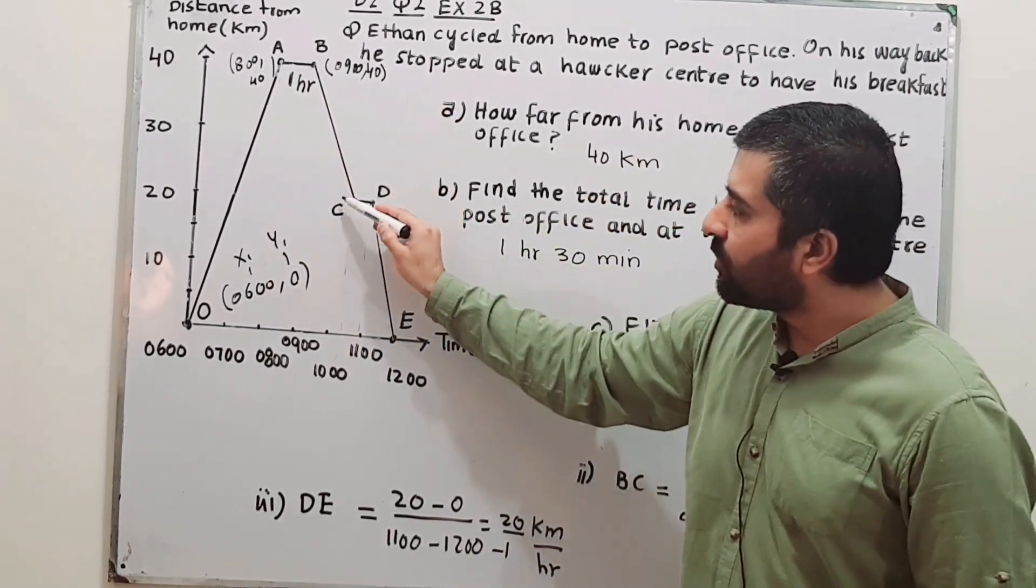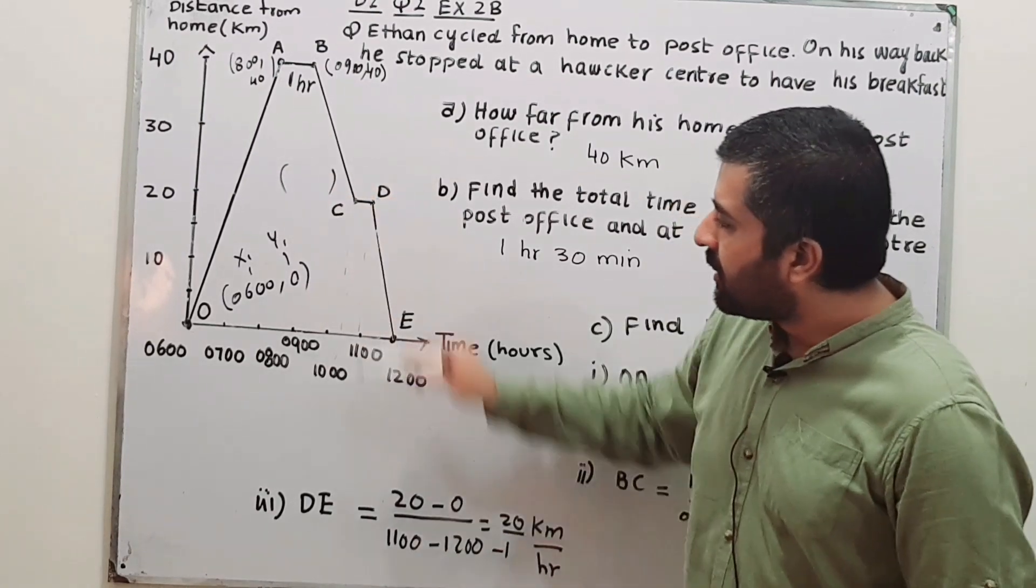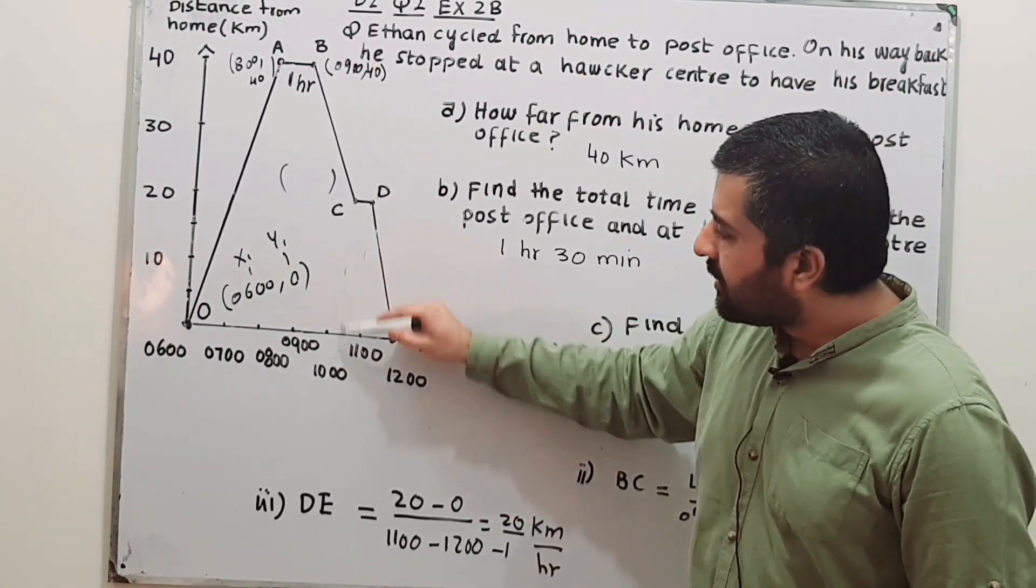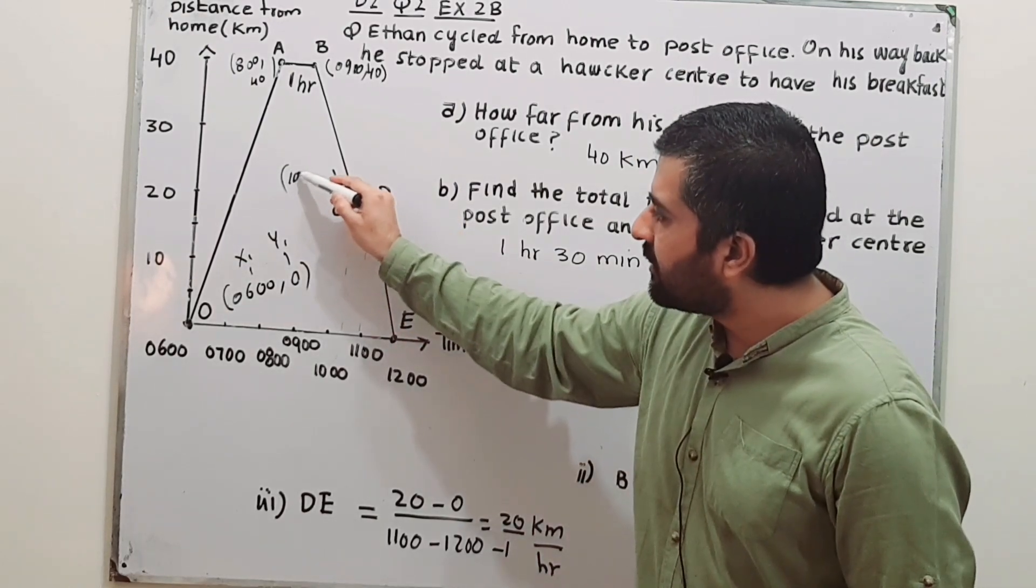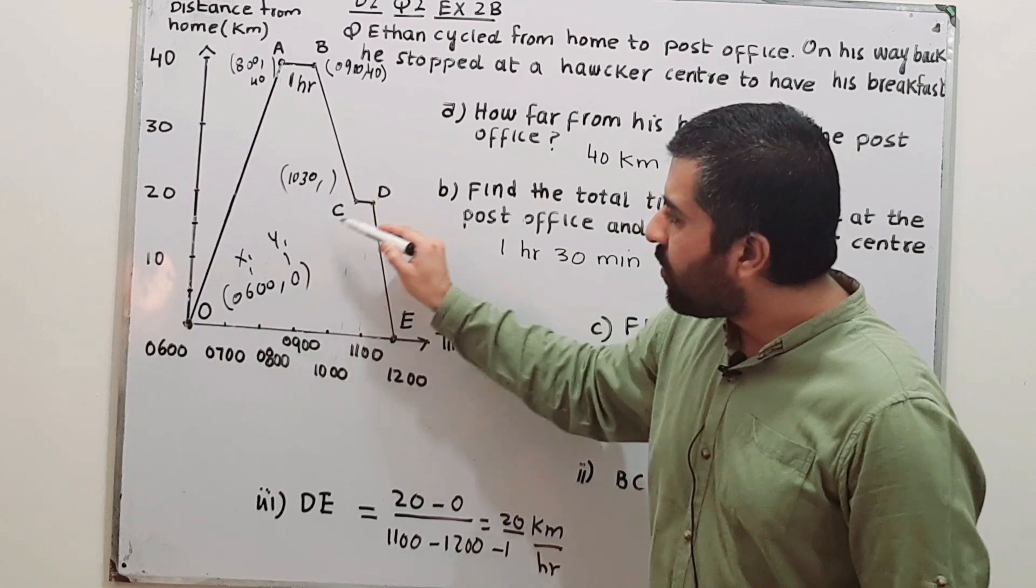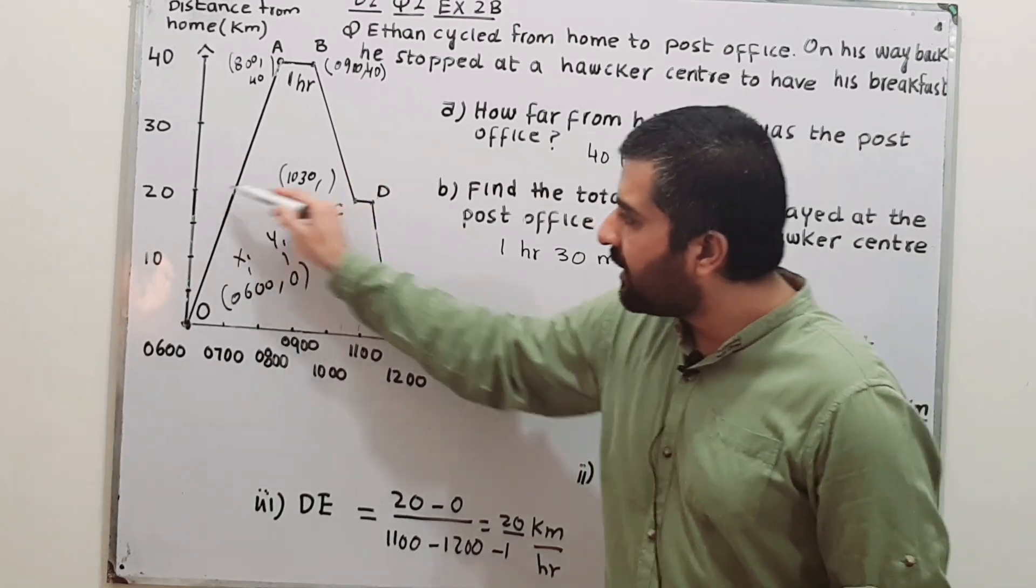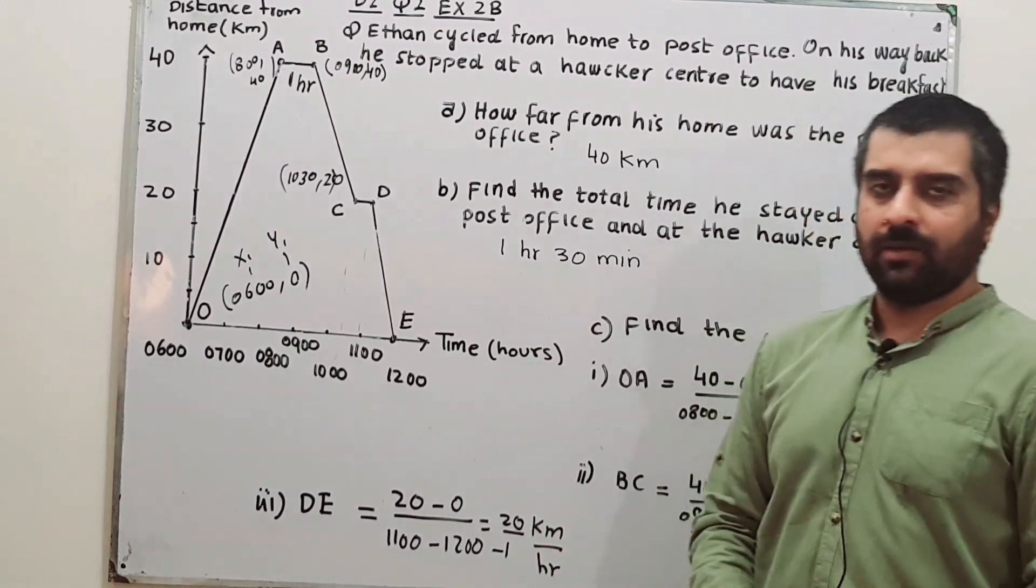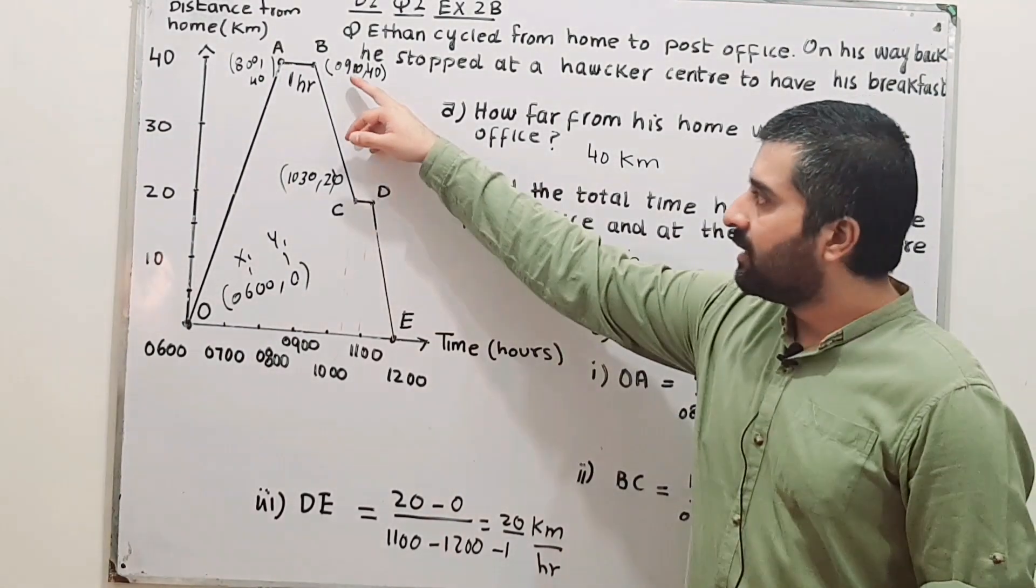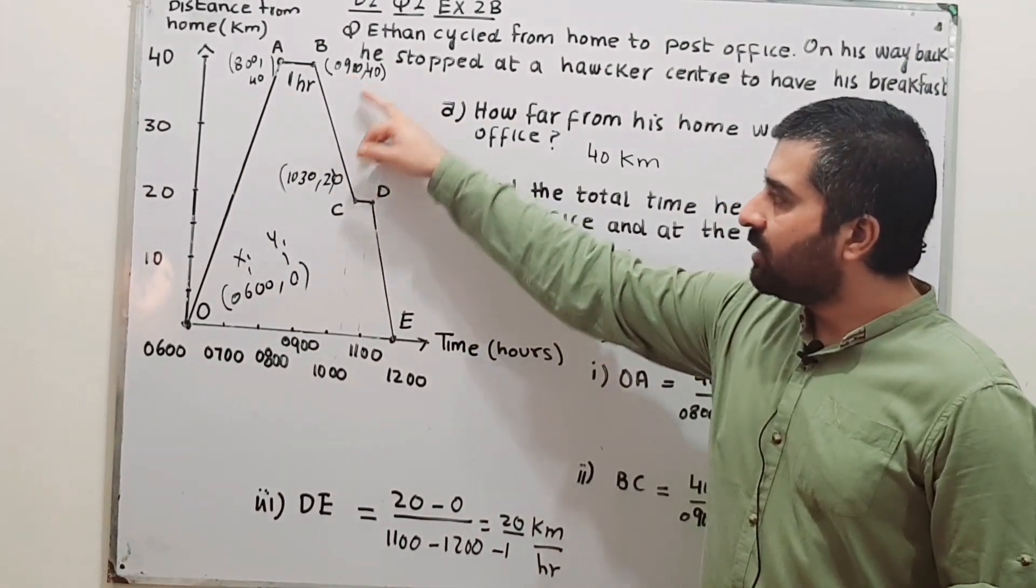Similarly, write down the coordinates for C. The value for x is 1030 hours, and value for y is 20, where we have distance. So this is x2, y2, then this is x1, y1.